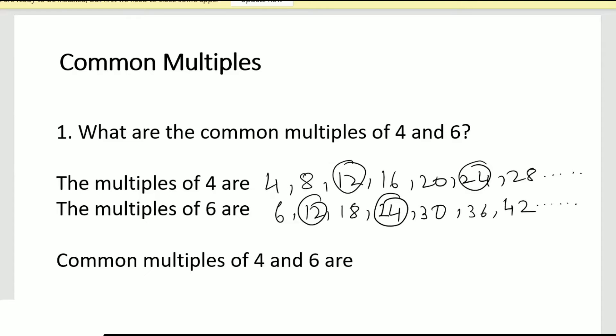28 is not there. So we can add a few more multiples if you want, like for 4, 4 times 7 is 28, 4 times 8 is 32, 4 times 9 is 36. So 36 we would get 36 here and it just goes on like this. So we can say common multiples of 4 and 6 are 12, 24, 36, and this goes to infinity.